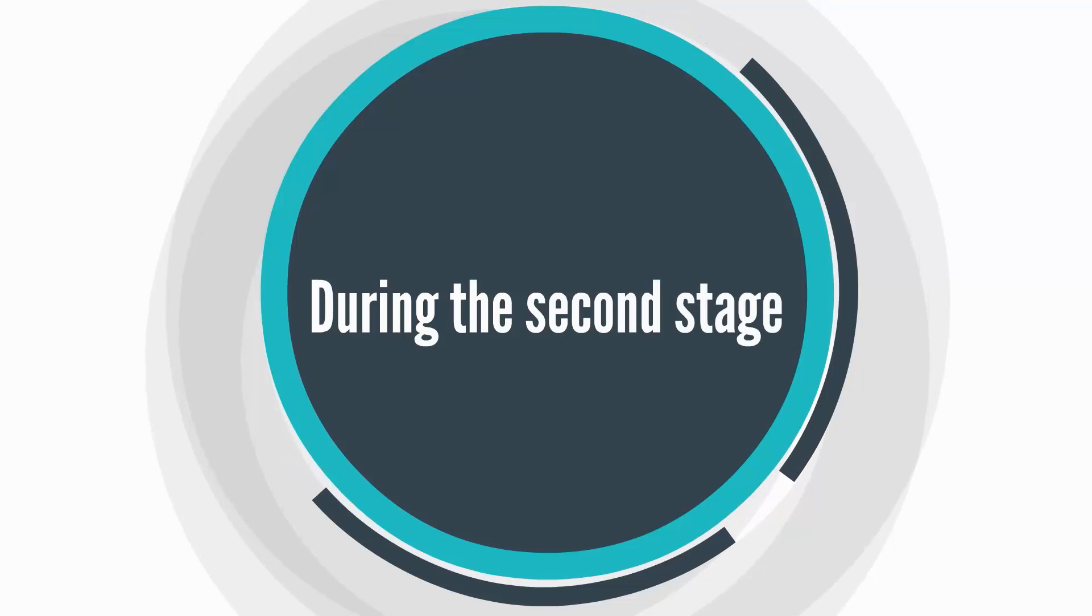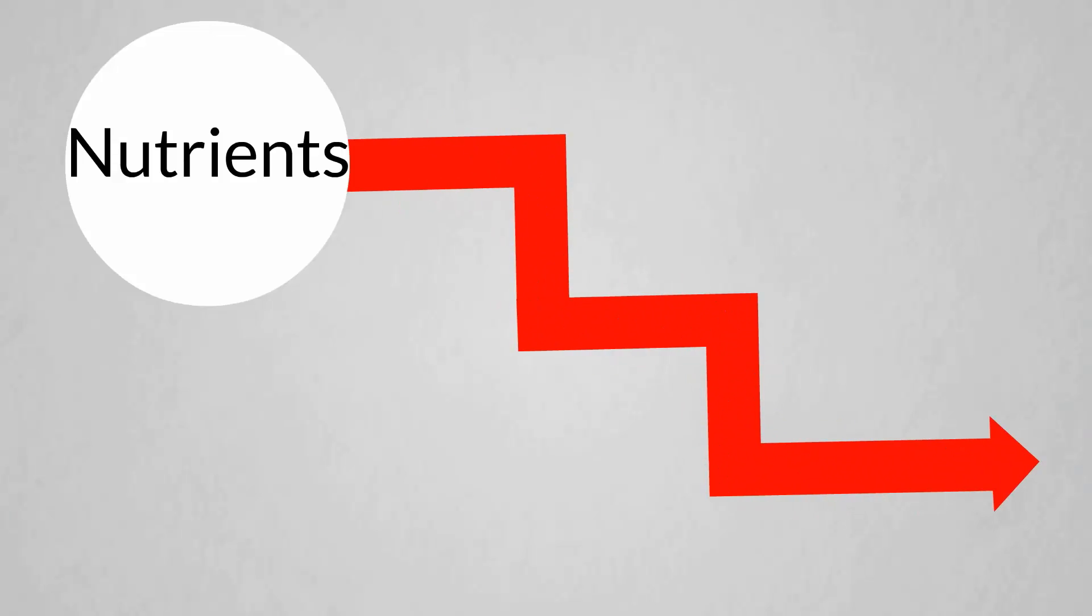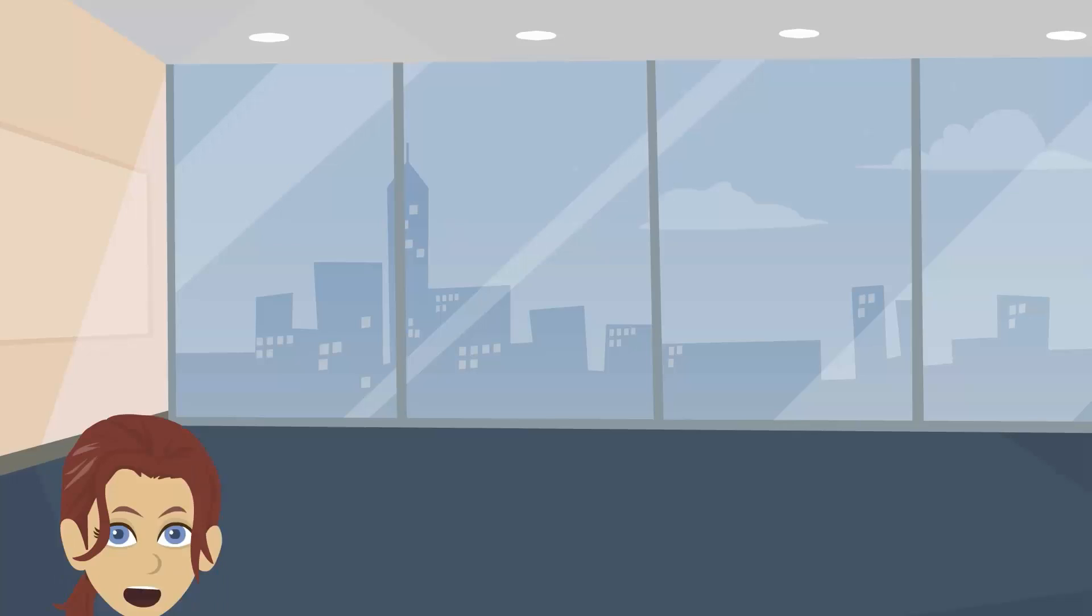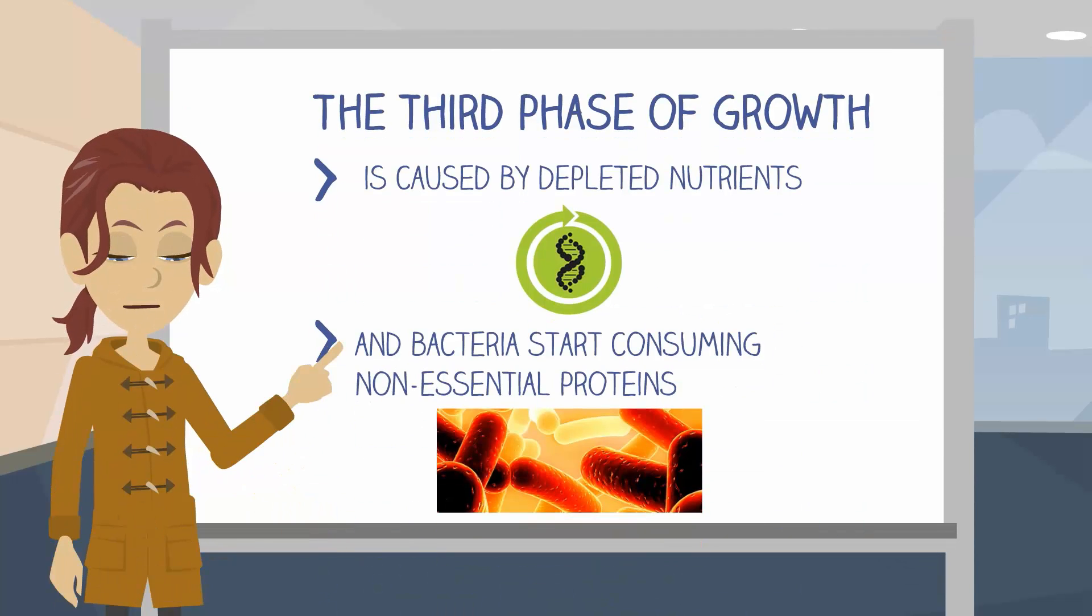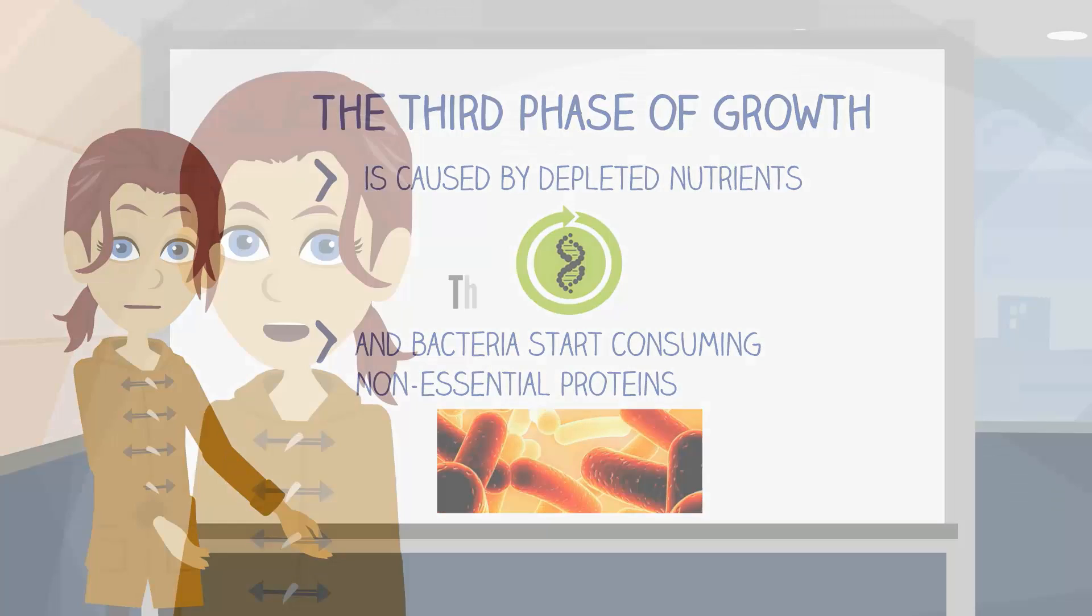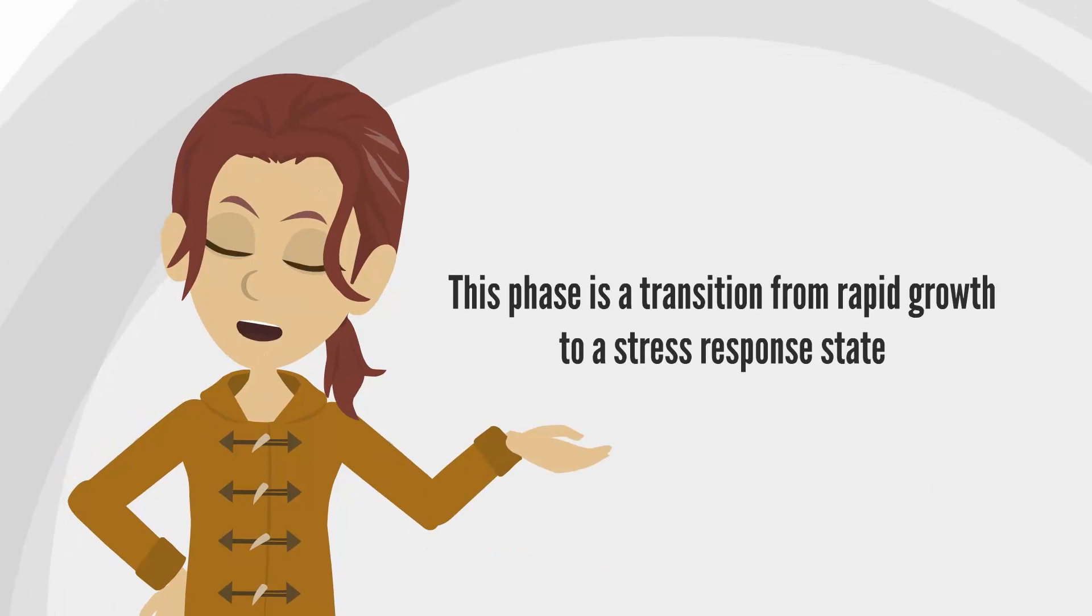During this second stage, nutrients are processed by bacteria at maximum speed until one of the nutrients is depleted and starts limiting the growth. The third phase of growth is caused by depleted nutrients and bacteria start consuming non-essential proteins. This phase is a transition from rapid growth to a stress-response state.